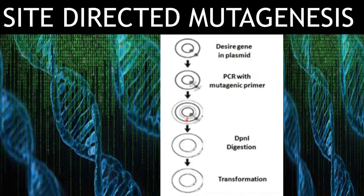The mutant will then be selected. In this way, site-directed mutagenesis is done to create a specific change in DNA to study its function.